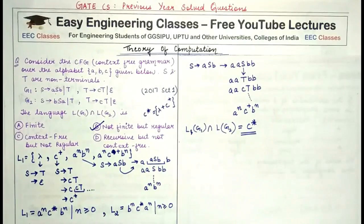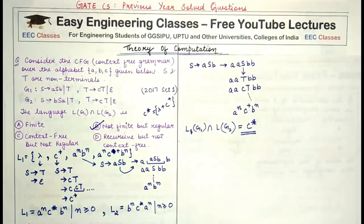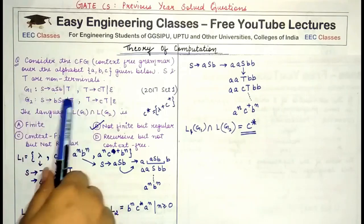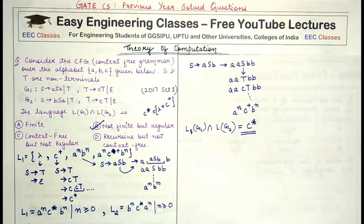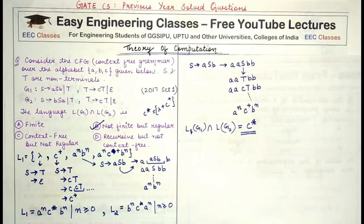That was today's question. It is a little tricky — you have to be careful in accommodating all strings generated by a language, then find their intersection and determine what kind of language results. Please mention in the comments how you found the video. Subscribe to Easy Engineering Classes for more lectures on GATE, UGC NET, and Bank IT Officer exam preparation. Press the bell icon for notifications. Thank you for watching — like and share the video.